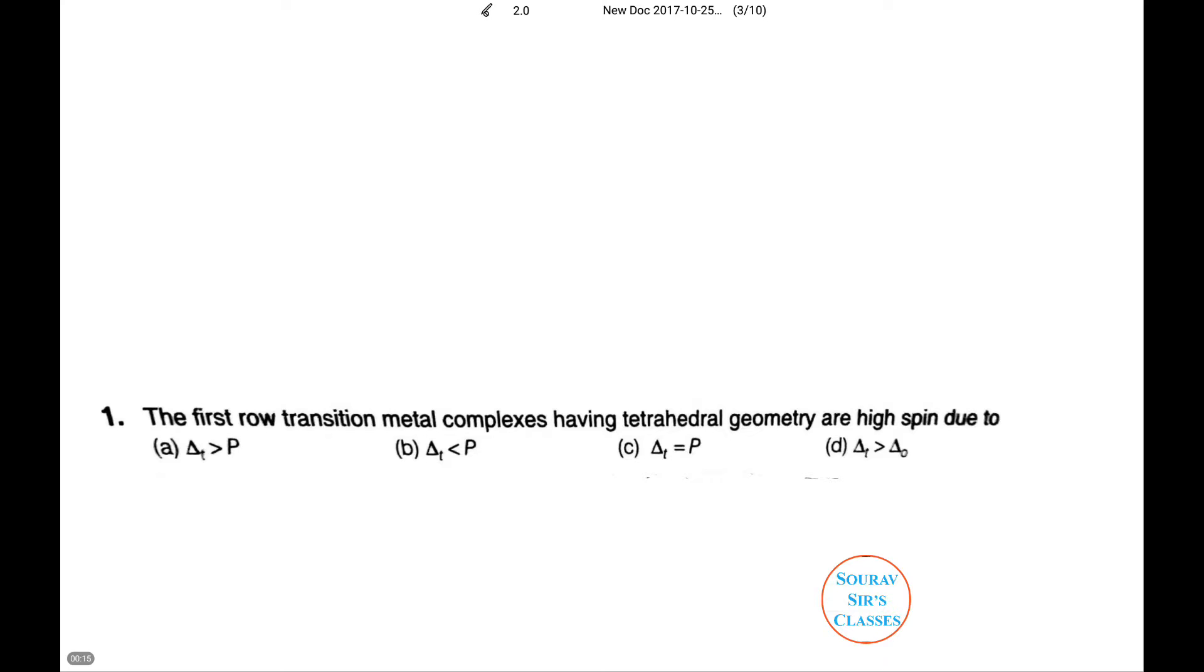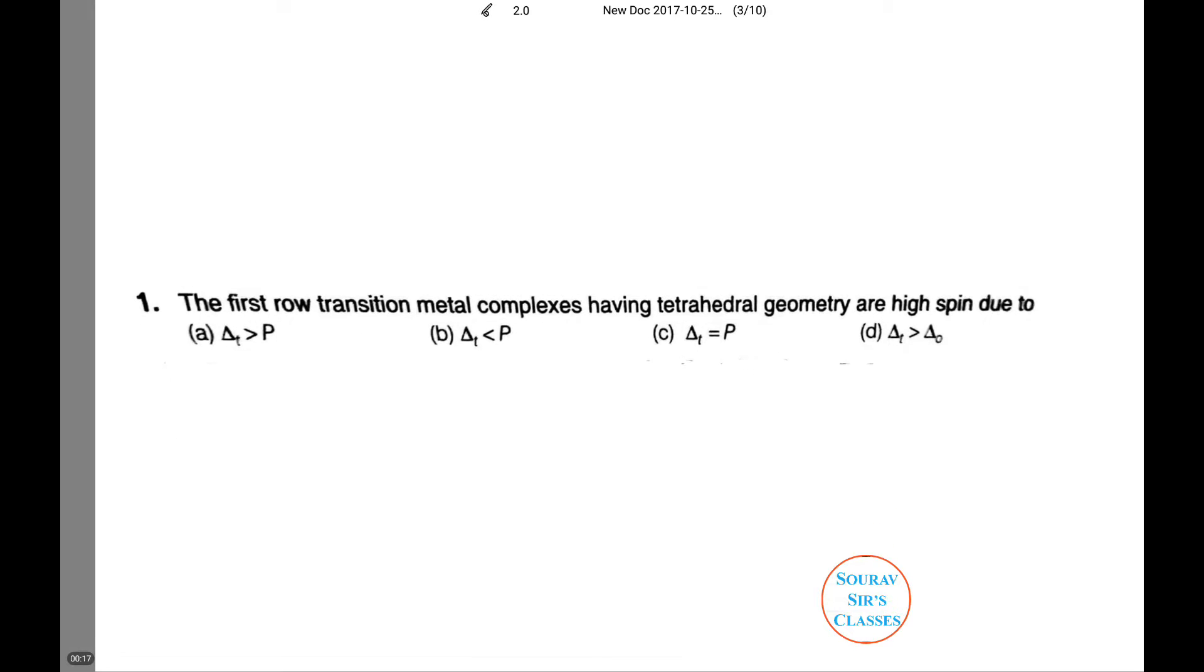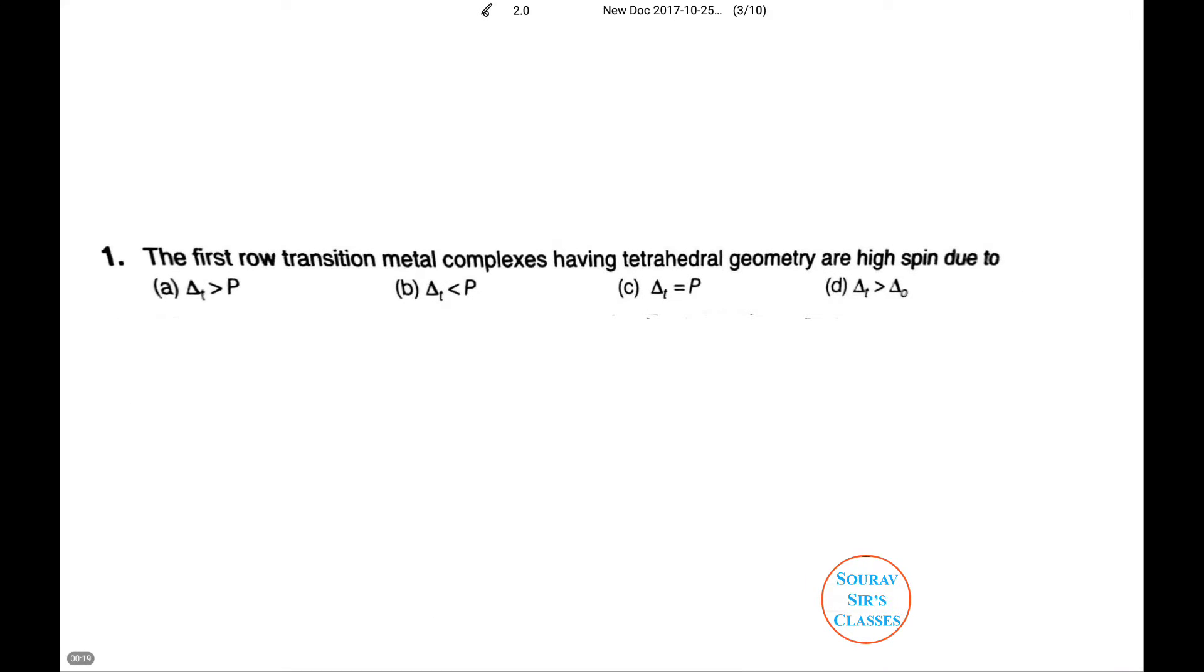The first row transition metal complexes having tetrahedral geometry are high spin due to: (a) Δt > P, (b) Δt < P, (c) Δt = P, or (d) Δt > Δo.